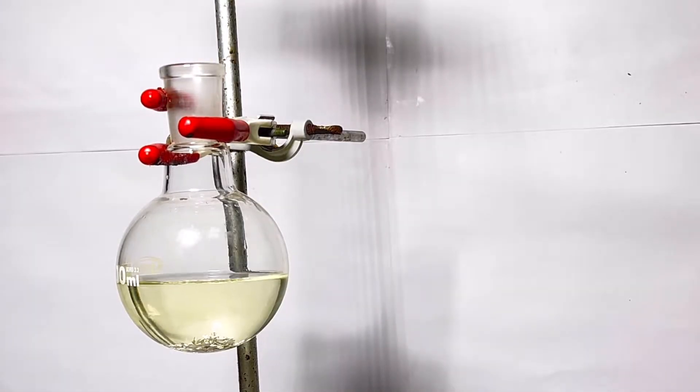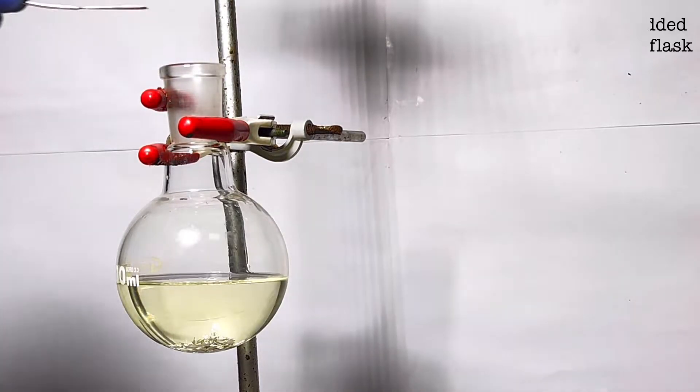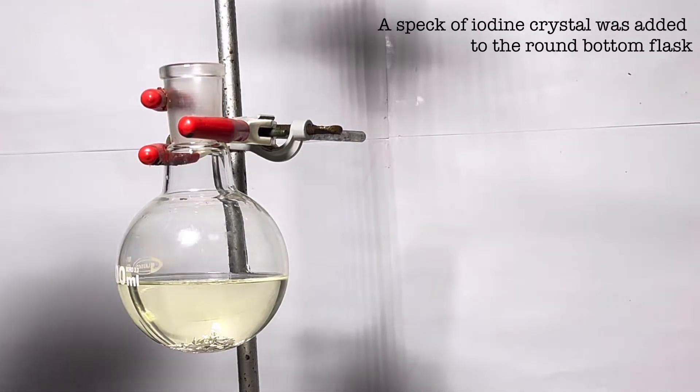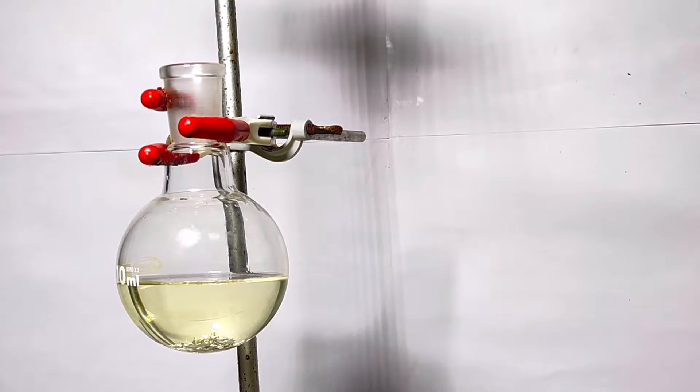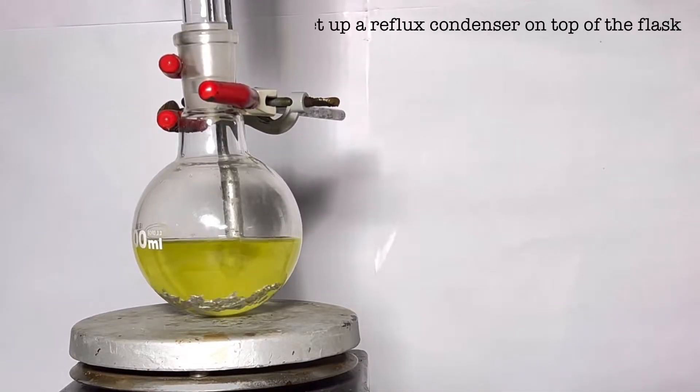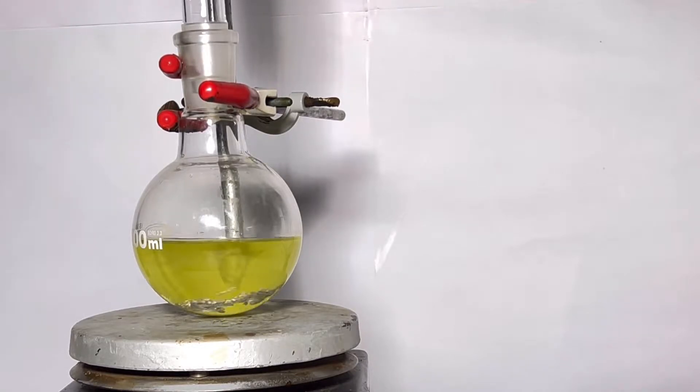The remaining 3 grams will be added later. Now, a speck of iodine crystal was added to the round bottom flask. Addition of iodine helps to remove any magnesium oxide present on the surface of magnesium metal turnings, thereby initiating the reaction. A magnetic stirring bar was then added to the round bottom flask, and the flask was set up on top of a hot plate stirrer equipped with a dimroth condenser.